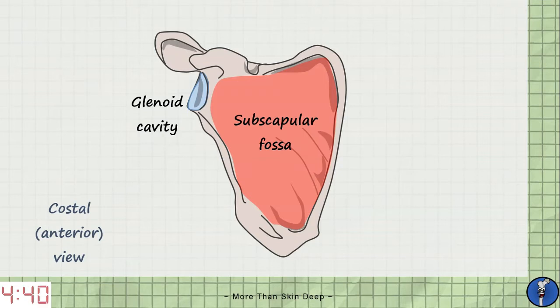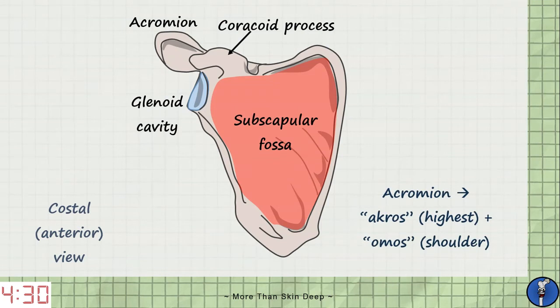We have two very important protrusions known as the coracoid process and the acromion. The acromion articulates with the clavicle. The word acromion comes from the Greek roots akros and omos meaning highest and shoulder as it is the highest point of the shoulder. And coracoid means raven-like because it kind of looks like a raven's beak.